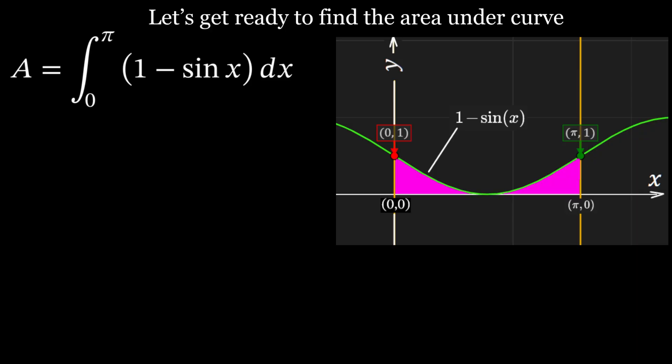Let's expand the integrand. A equals the integral of one dx from zero to pi minus the integral of sine x dx from zero to pi. The integral of one is x, and the integral of sine x is minus cosine x. Since we have a negative sign before the integral, it becomes plus cosine x.